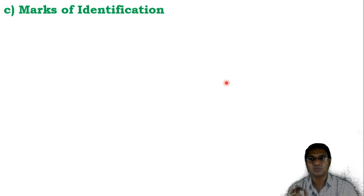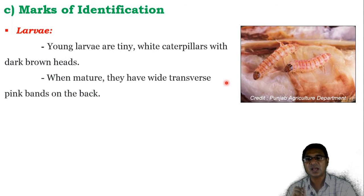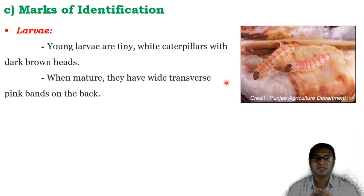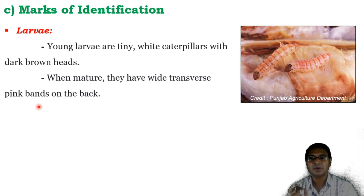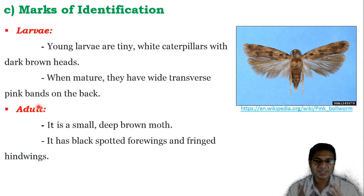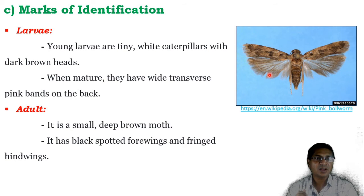Marks of identification: The larvae — young larvae are tiny white caterpillars with dark brown heads. But when they feed on cotton balls or when they mature, certain changes are observed: they develop wide transverse pink bands on the back of their body. Adults are small and deep brown in color. They have black spotted forewings and fringe hindwings — the fringe border of the hindwings can be observed.